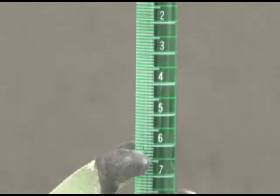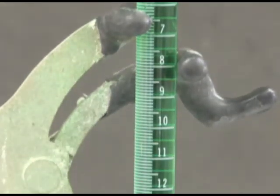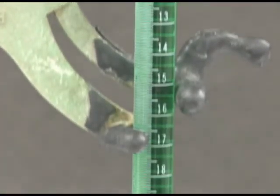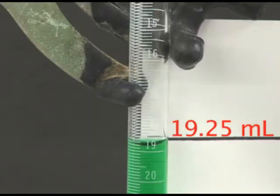To read the volume delivered by the burett, remember that volume marks increase down the burett. For example, the volume reads 19.25 milliliters.